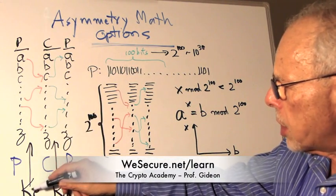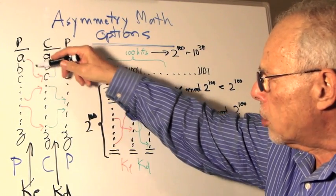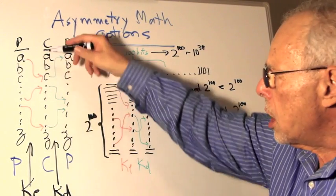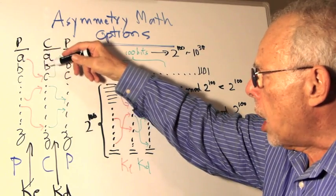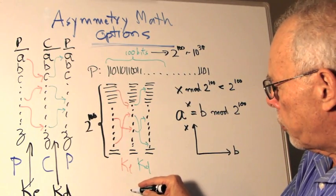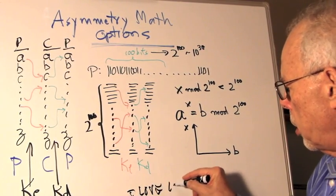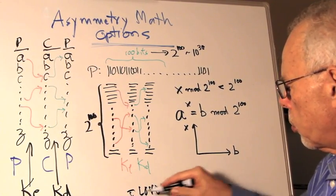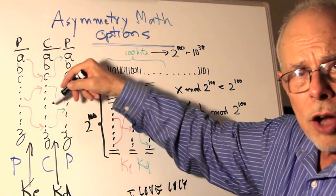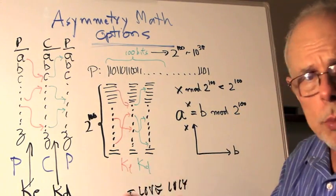And so we will have some key that will instruct us how to create those substitutions, and we will have this table that will allow any message of "I love Lucy" to be substituted. Each letter here will be substituted according to this table. And instead of "I love Lucy" we will have some gibberish.